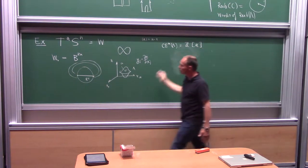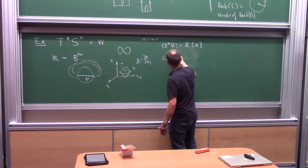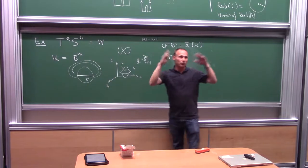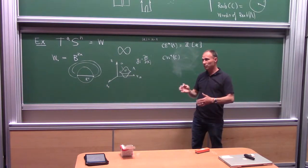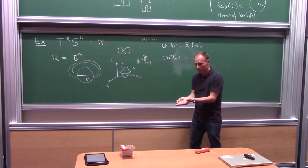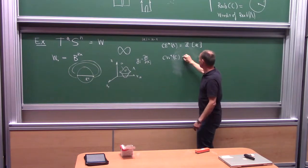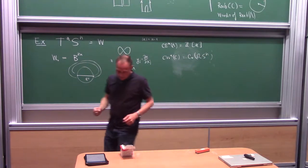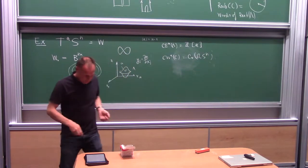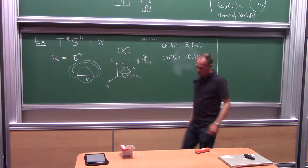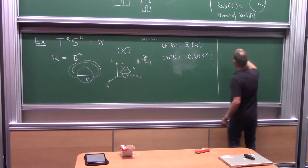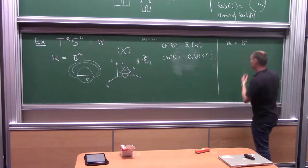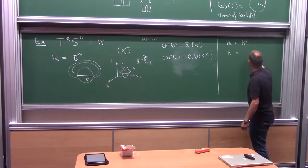This is supposed to equal the wrapped Floer homology of C, which is the cotangent fiber in T*Sⁿ. By the PSS isomorphism, that equals chains on the based loop space of Sⁿ, which is correct.